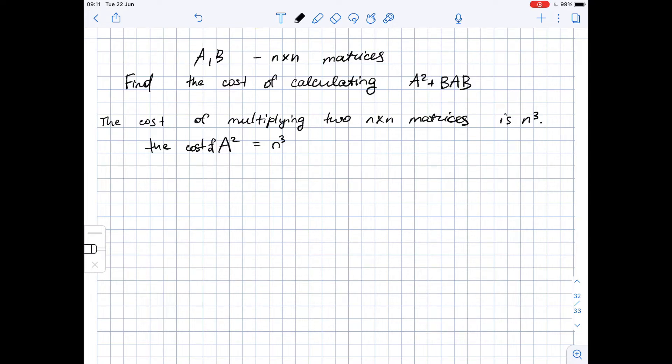What is the cost of finding B times A times B? The cost of BAB is the same as cost of BA times B. When we find BA, the cost of this operation is n cubed because, again, we multiply two n by n matrices.